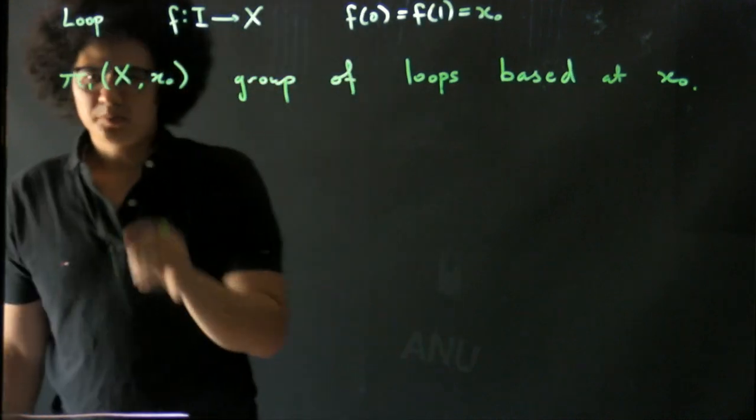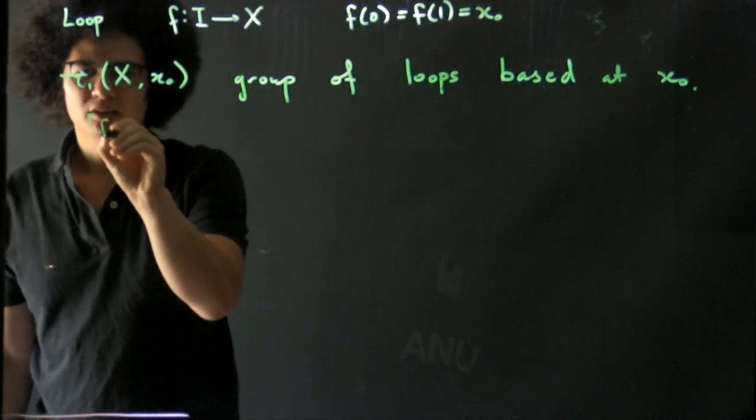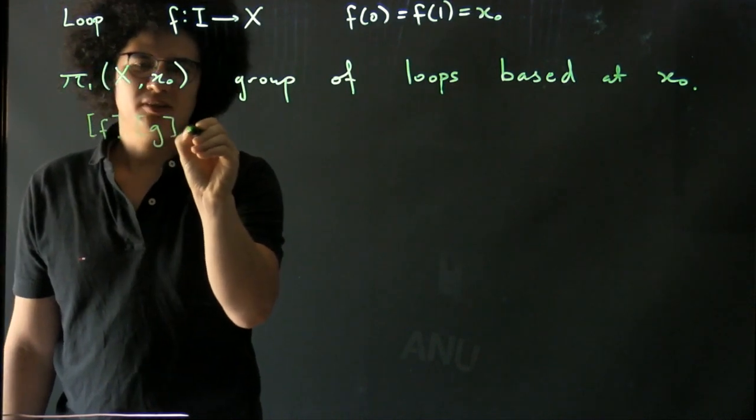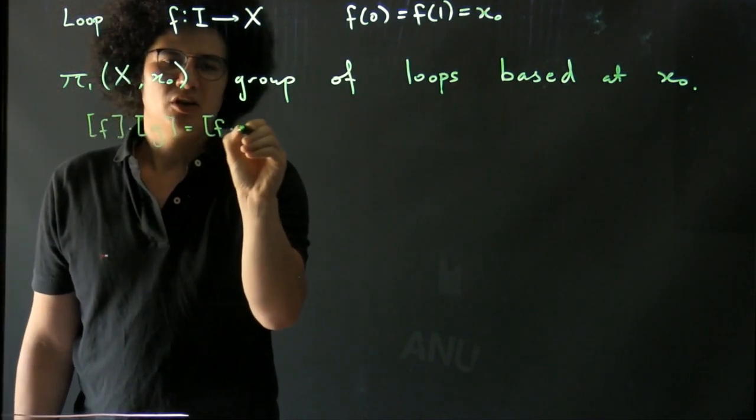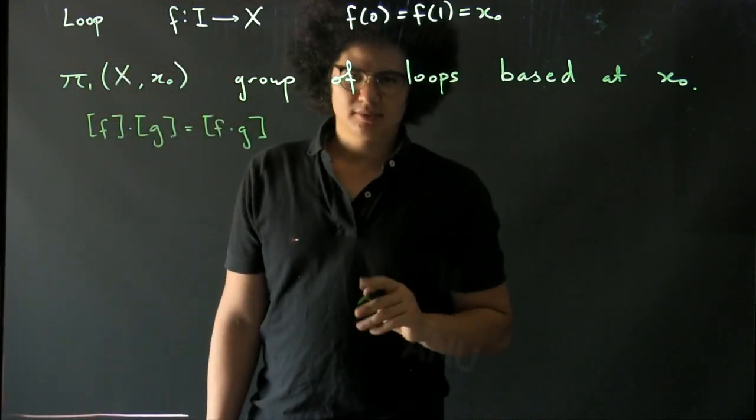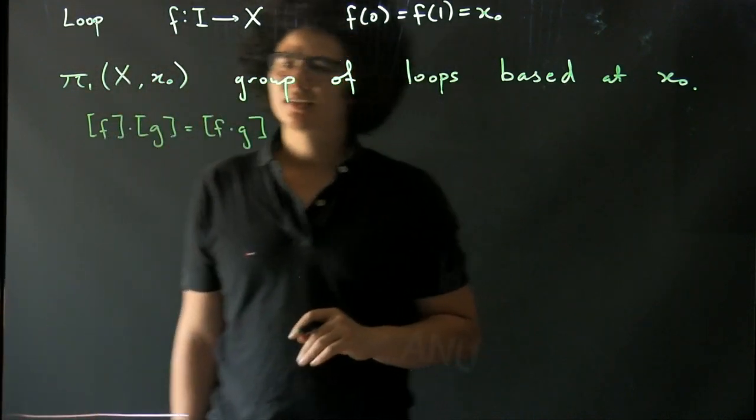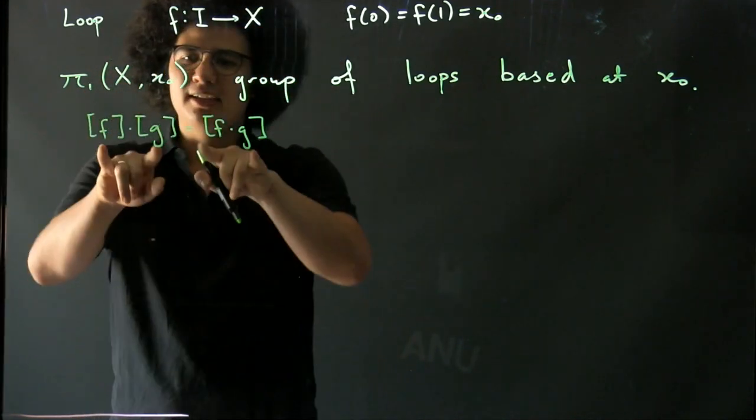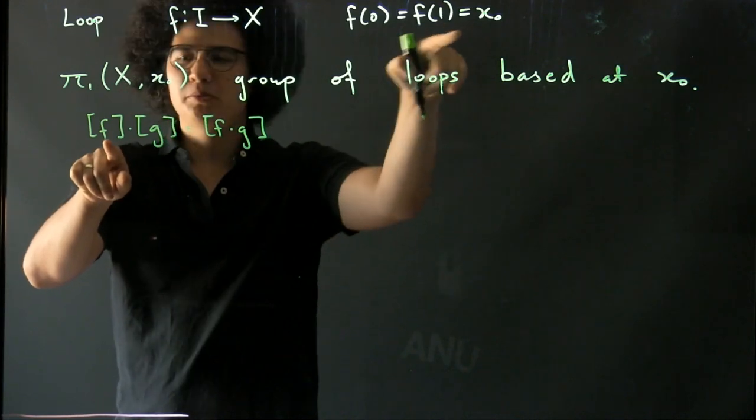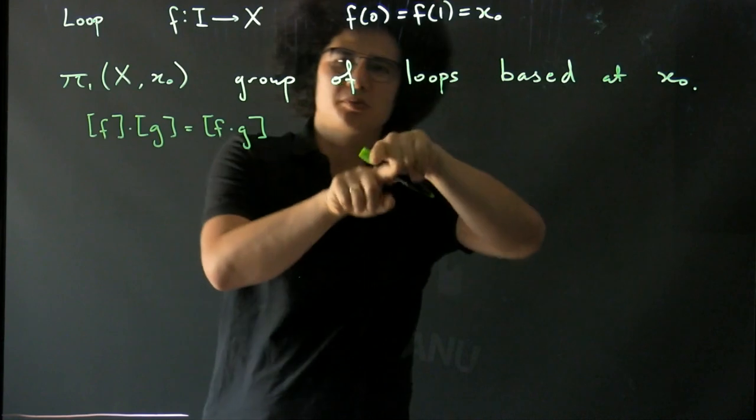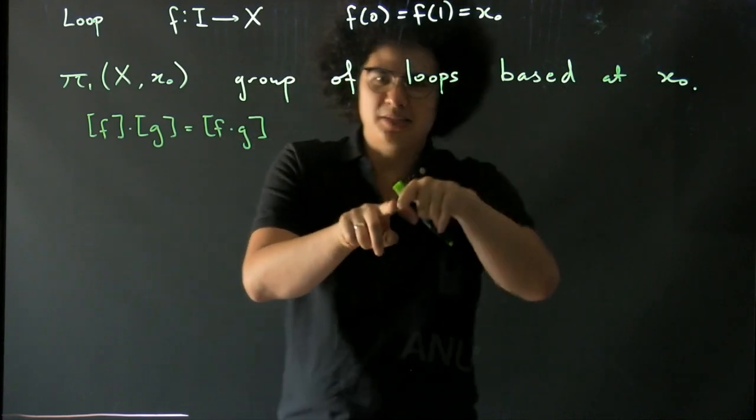Okay, is this thing a group? Well, we've seen that we can, we have a multiplication on homotopy groups and homotopy classes of paths, and the important thing is that because it's a loop, any composition of loops always has the same base point.